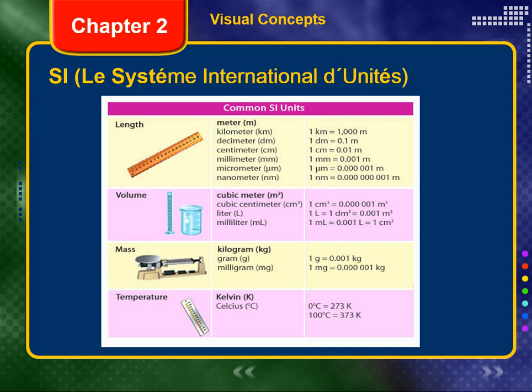SI units are defined in terms of standards of measurement. The standards are objects or natural phenomena that are constant in value, easy to preserve and reproduce, and practical in size. International organizations monitor the defining process. In the United States, the National Institutes of Standards and Technology plays the main role in maintaining standards and setting style conventions. For example, the number 75,000 is written as 75 space 000, not 75 comma 000, because the comma is used in other countries to represent a decimal point.